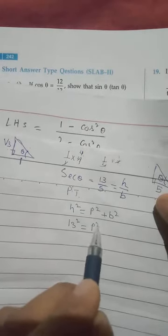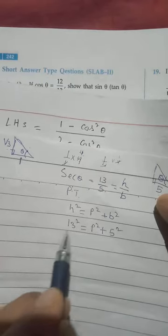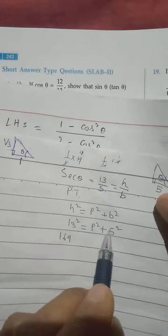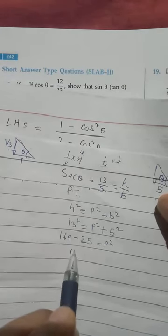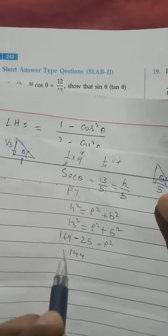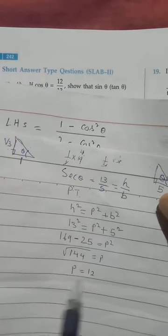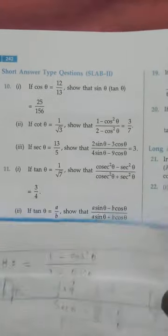h = 13, b = 5. So 13² = p² + 5², meaning 169 = p² + 25. Bringing 25 to the other side: p² = 169 - 25 = 144. Taking the square root, p = 12. So perpendicular = 12, base = 5, hypotenuse = 13.